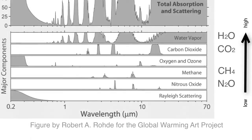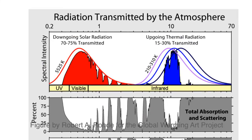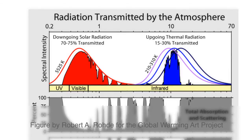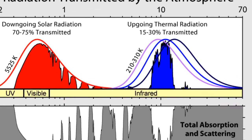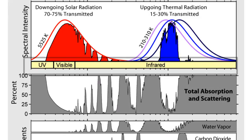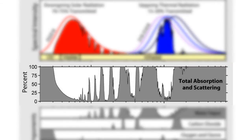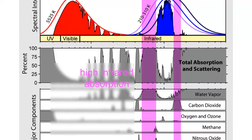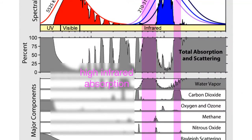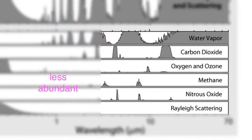This image shows the electromagnetic absorption spectra for these four primary greenhouse gases. At the top, you see the electromagnetic radiation transmitted by the atmosphere. The red region represents the incoming solar radiation, whereas the blue represents the outgoing thermal radiation. The x-axis is the wavelength of the radiation. As you can see in the total absorption and scattering graph, water vapor and carbon dioxide contribute the most. Methane and nitrous oxide, molecule for molecule, are 70 times more absorbent than a carbon dioxide molecule, but they're less abundant in the atmosphere than CO2.